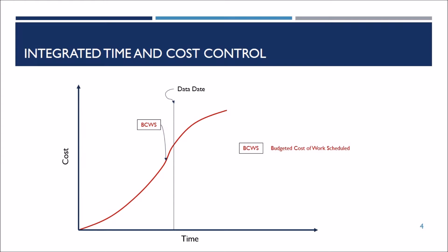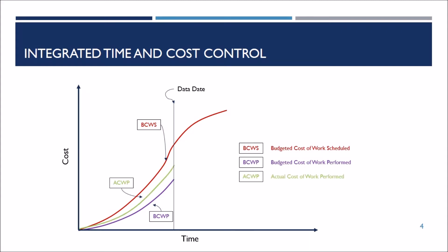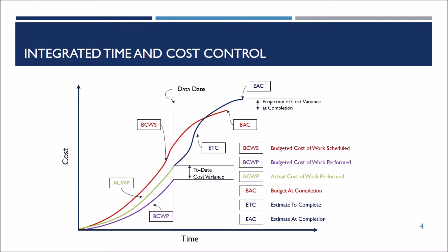Now, let's assume that you selected this data date for updating your project. You may find that this curve is your earned value, which is the percentage of completion multiplied by the originally allocated budget. But this curve shows the actual cost to date. Here you can find the difference between the earned value and the actual cost — this difference is known as cost variance. This point is the budget at completion based on the originally allocated budget. This blue curve indicates the estimate to complete, which ends up with the point indicating the estimate at completion.